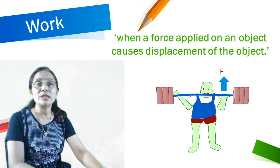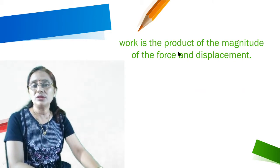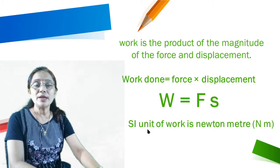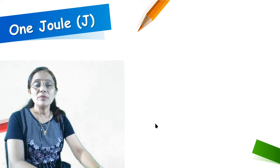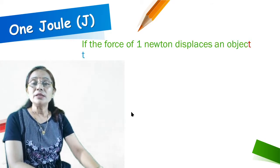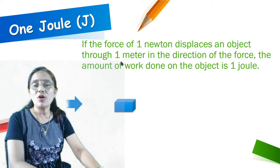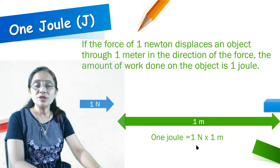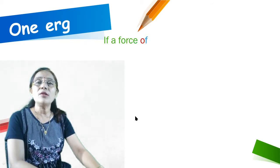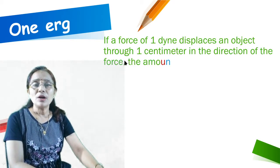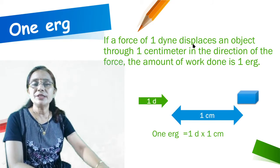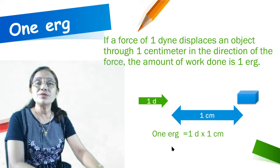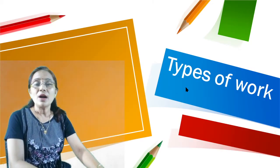Work is done. In simple language, work is the product of the magnitude of force and displacement. Work done is equal to force into displacement: W = F × S. The unit is Newton-meter, which means 1 Joule. If a force of 1 Newton displaces an object through 1 meter in the direction of force, the work done is 1 Joule. 1 Joule = 1 Newton × 1 meter. In CGS, if a force of 1 dyne displaces an object through 1 centimeter, the work done is 1 erg. 1 erg = 1 dyne × 1 centimeter.